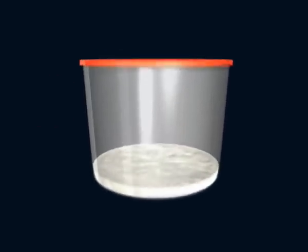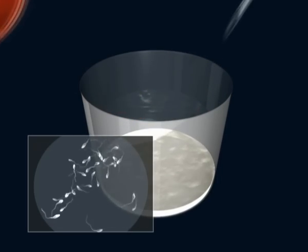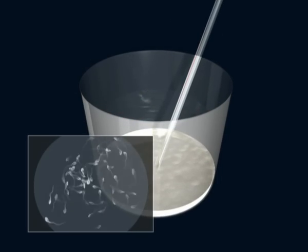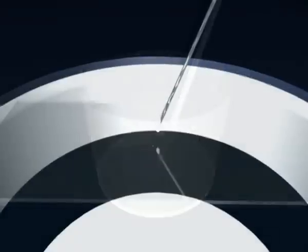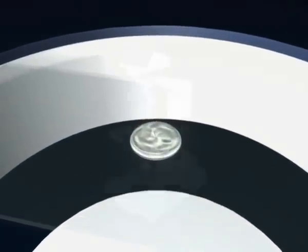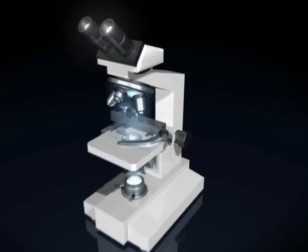Semen Analysis. The ejaculate is deposited in a sterile recipient and aspirated with a micropipette and spread over a slide that is then examined under a microscope to evaluate a number of parameters.